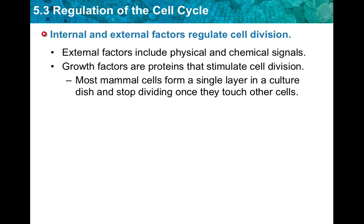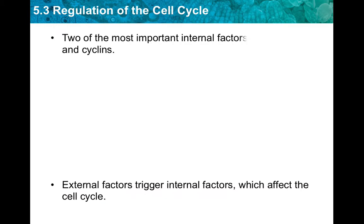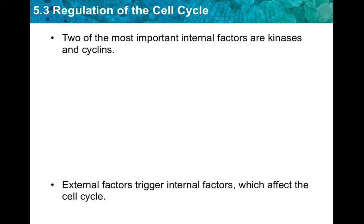Most mammal cells form a single layer in a culture dish and stop dividing once they touch other cells. Two of the most important internal factors are kinases and cyclins. When external factors bind to receptors, they can trigger internal factors that affect the cell cycle.